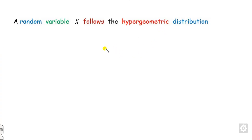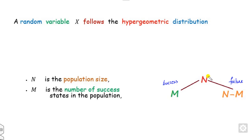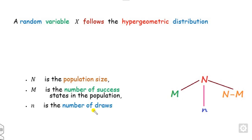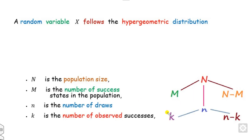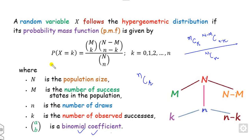Any random variable X is said to be hypergeometric. Suppose N is my population size and M is my number of successes. That means if I have N total number of experiments, out of that total, how many successes are there — M; how many failures — N minus M. Out of this total, how many experiments we want to draw is n, and out of n how many satisfy this condition is k, and the remaining n minus k are failures. Based on this, we can define the hypergeometric PMF as M-choose-k times (N minus M)-choose-(n minus k), divided by N-choose-n, where k varies from 0 to n.